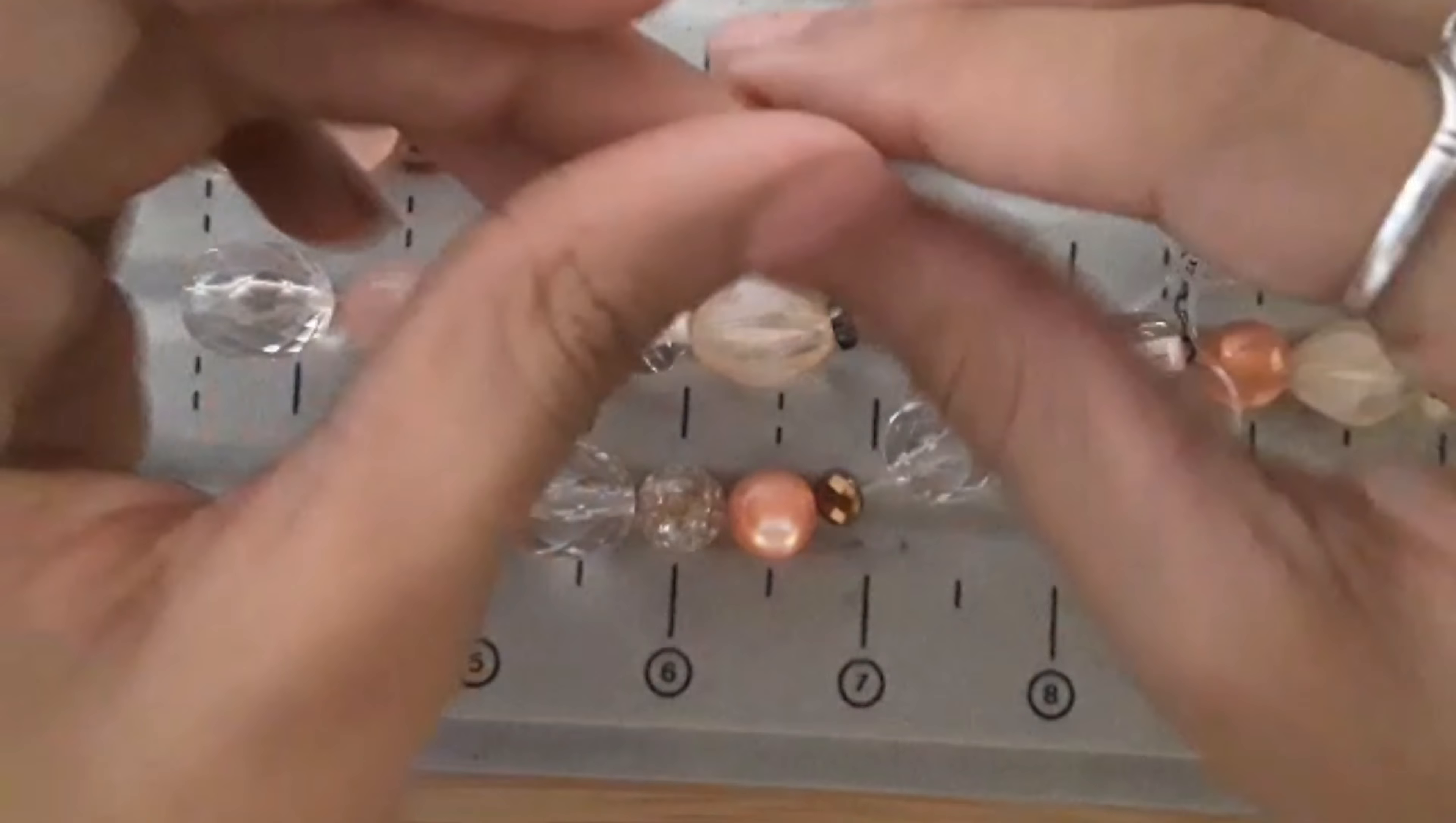And now once they're dry, you can cut the excess of the stretch cord off. Make sure not to cut the knot, just to cut the stretch cord that's left there. You go, and you're just going to cut the rest of the stretch cord that you have here. And there you have your bracelet.